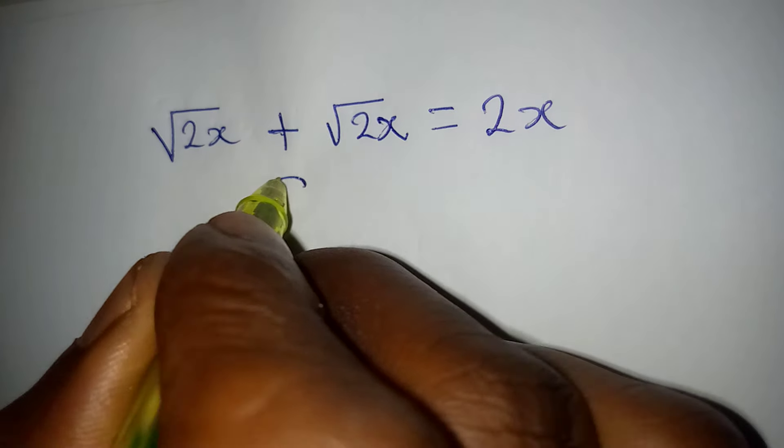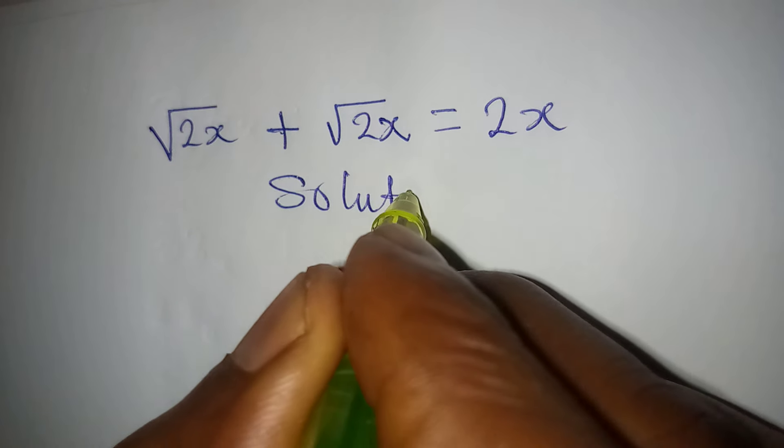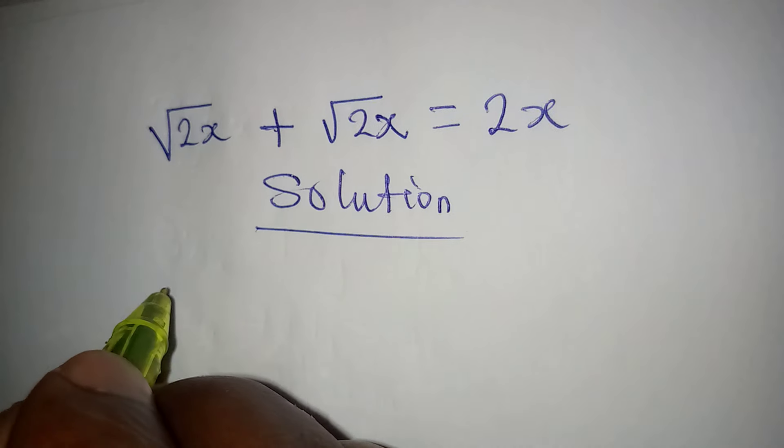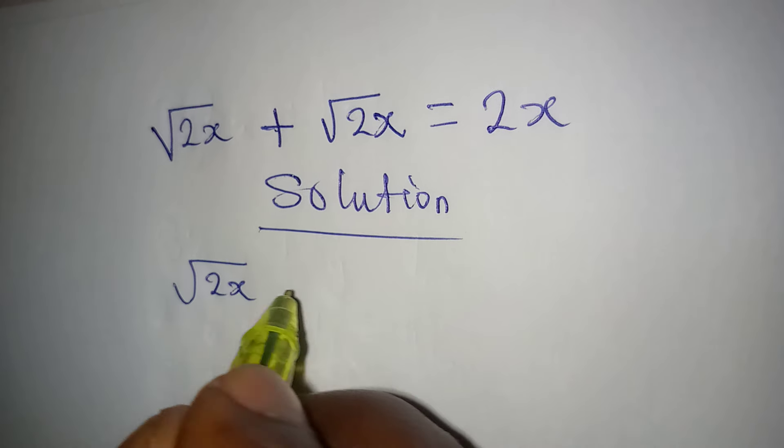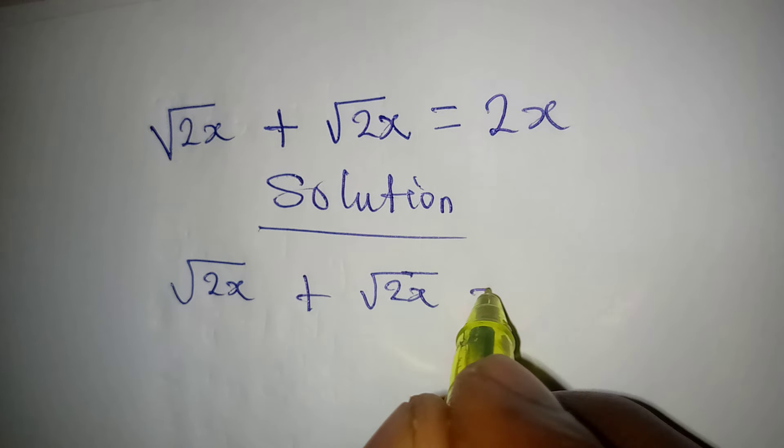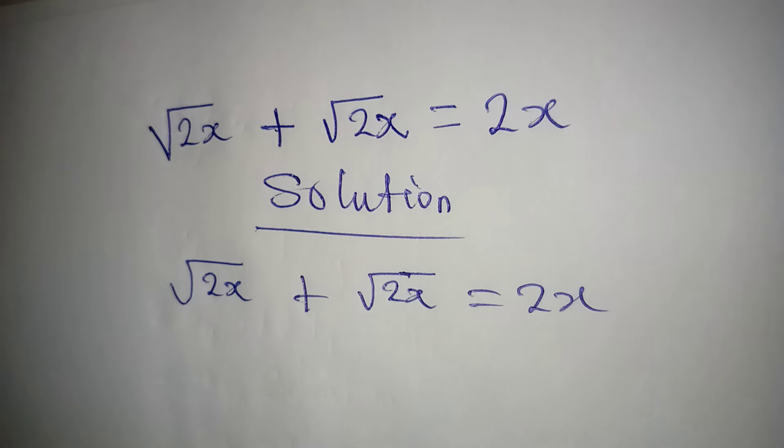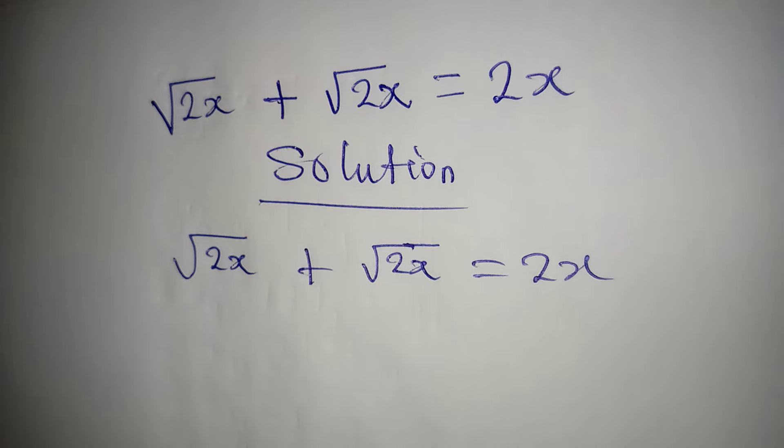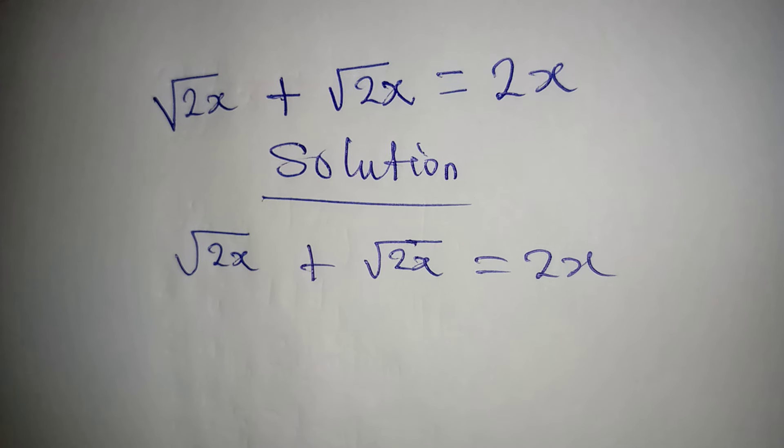Hello everyone, let's look at this problem together: square root of 2x plus square root of 2x equals 2x. Now do you think this is possible? Let's do this together.